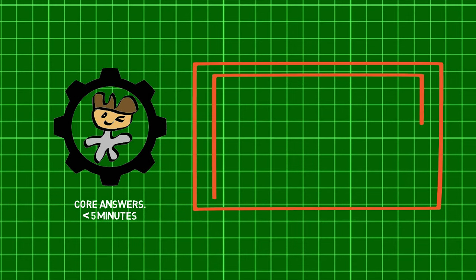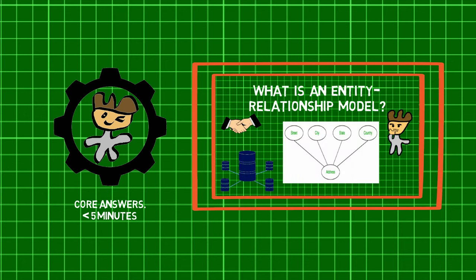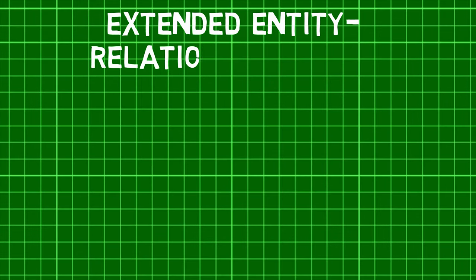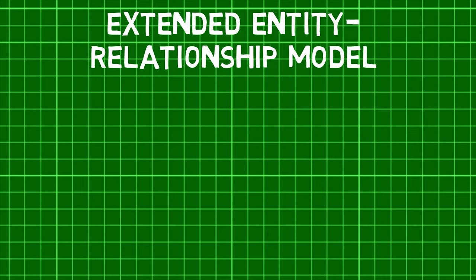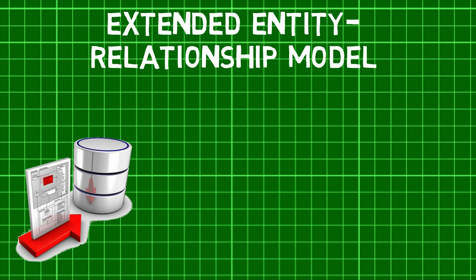Before we jump in, check out the previous part of this series to learn about what an Entity Relationship Model is. Now, an Extended Entity Relationship, or EER model, as the name suggests, is a high-level data model that incorporates the extensions to the original ER model. They have the following three extensions.